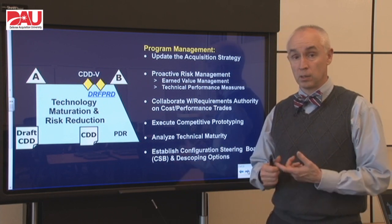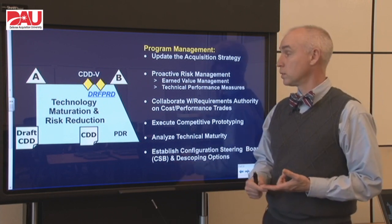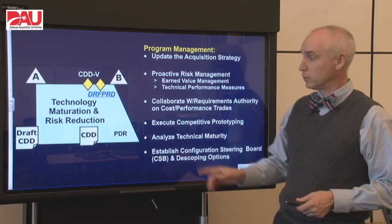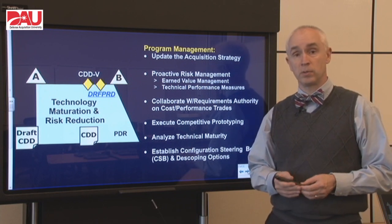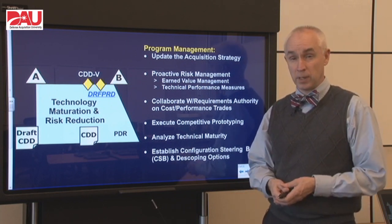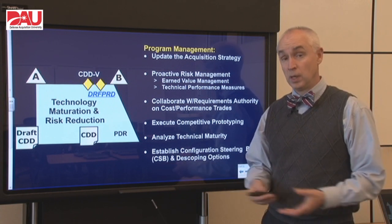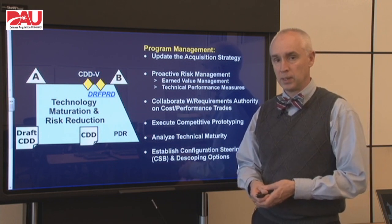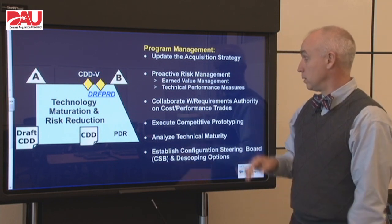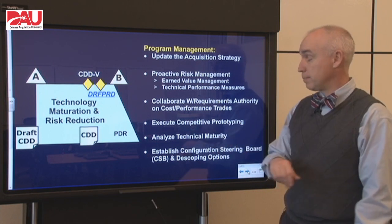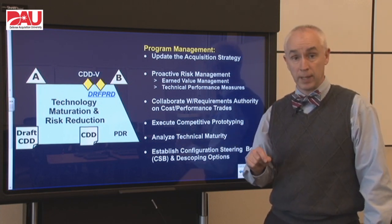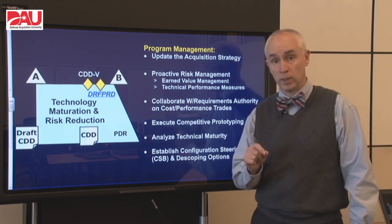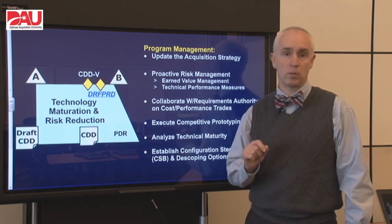Two powerful tools for that are earned value management and technical performance measures. We also want to collaborate with our requirements folks at the program level to make sure that we have a say in what goes into that capability development document. We want to make sure it's affordable and doable from a technical standpoint. We also want to execute that competitive prototyping and analyze technical maturity, because we will not get out of this phase successfully at Milestone B unless we have proved that this technology works in at least a relevant environment.